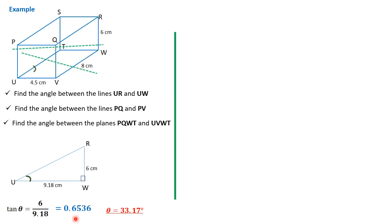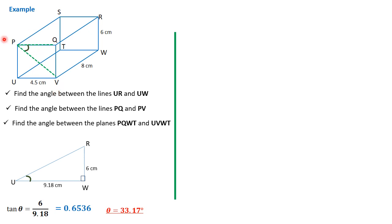The next part of the question, we're told to look for the angle between PQ and PV. PQ is that line there, and PV is a diagonal from P to V. Please notice that QV and PQ are perpendicular to each other, and therefore PV is the hypotenuse. The angle we're looking for is the angle between those two lines.